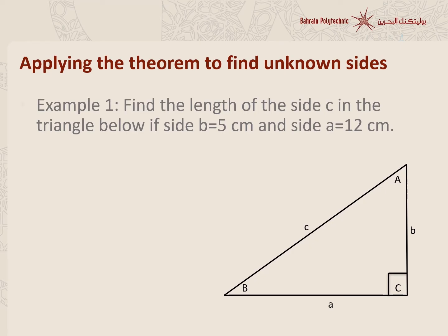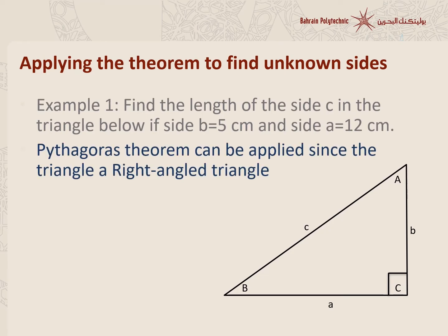According to the question, we would like to find the length of side c, which is the hypotenuse, because it is opposite to the 90-degree angle. We want to find the hypotenuse, which is side c, given that the length of b is equal to 5 and the length of a is equal to 12 centimeters. Pythagoras' theorem can be applied here since the triangle is a right angle triangle. The rule states that the length of the hypotenuse is equal to the square root of the squared sum of the other two sides.